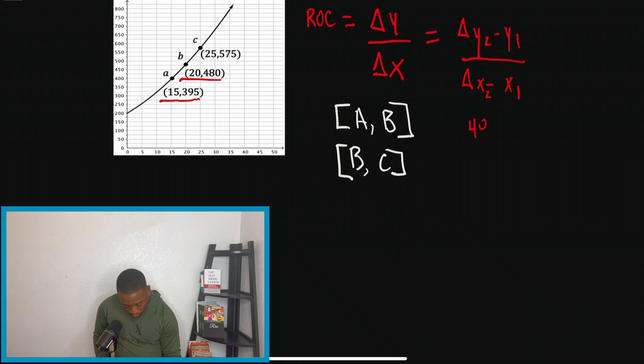So I'm going to do 480 minus 395. So that's my Y2 minus Y1, right? And what we have to understand is that Y2 is paired with X2. So if Y2 is 480, that means X2 has to be 20. We cannot put 15 first because then we're not following the correct format of the equation. And that's one of the most challenging things to do. So please make sure you guys key in on this during this video.